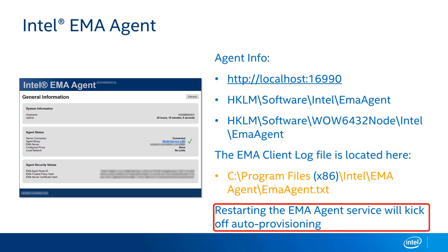One other thing to mention: if you need to accelerate the AMT configuration process for debugging purposes, you can restart the EMMA agent service to kick off the auto-provisioning process again. So if you've manually unconfigured AMT and want to reprovision it, just restart that service and the process starts all over again.